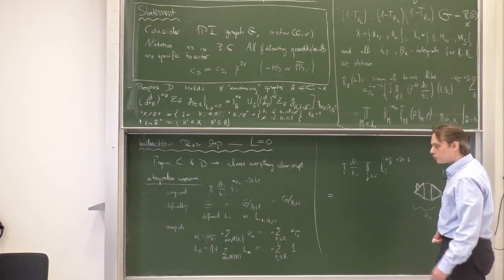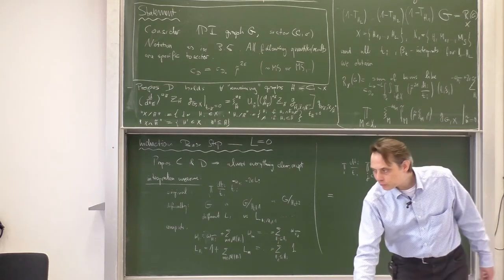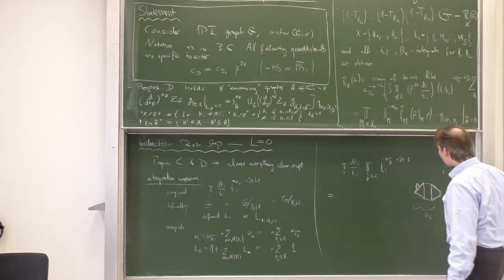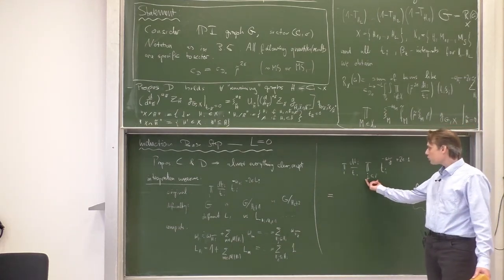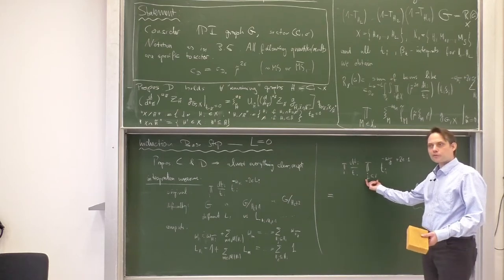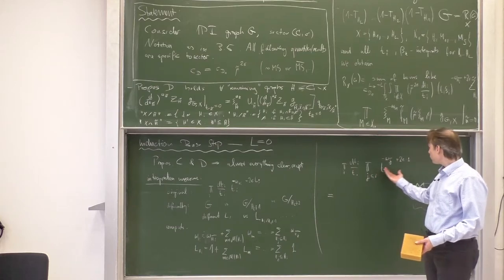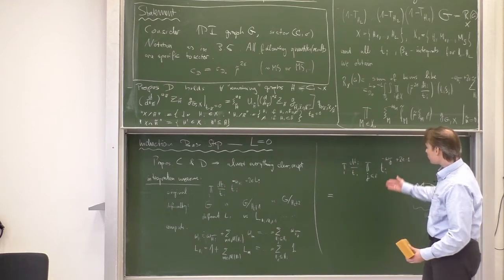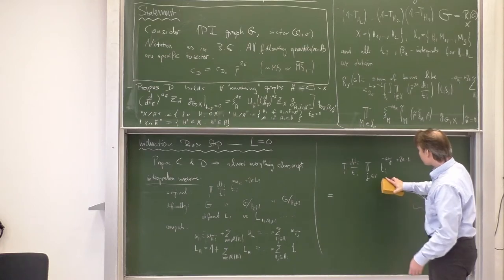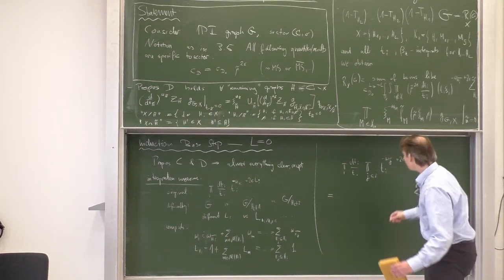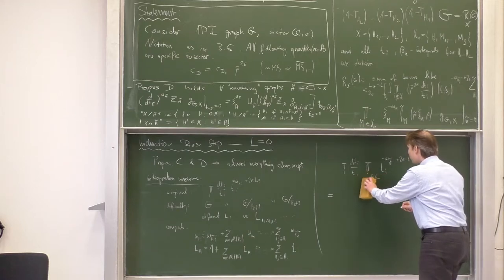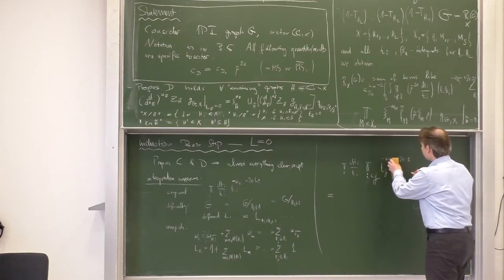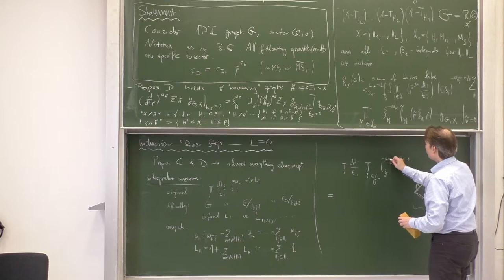Now we can use a clever trick. We have here a product over all pairs of graphs where one is bigger than the other, and here we have some factor multiplied over. What we can do is flip the indices — a simple renaming where I becomes J and J becomes I — and then we have basically our expression that we want.